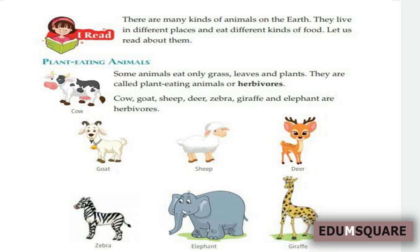The three types are: plant-eating animals or herbivores, flesh-eating animals or carnivores, and omnivores. Plant-eating animals are those that eat only grass, leaves and plants.